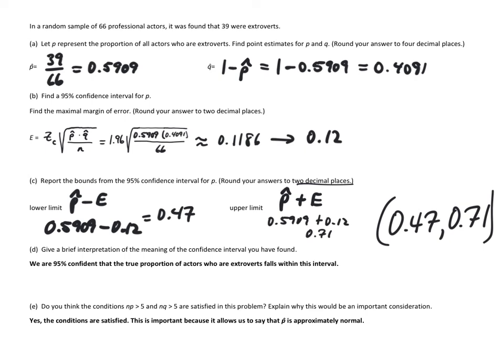66 times the fail rate, which is 0.4091, gives us 27. So both NP and NQ are greater than 5, and that allows us to say that our proportion estimate, P hat point estimate, is approximately normal.